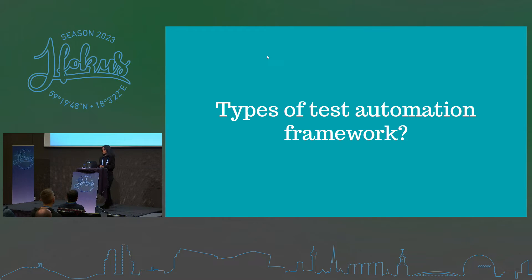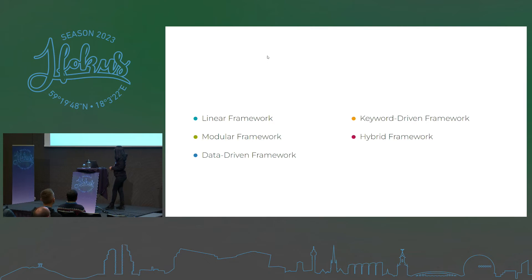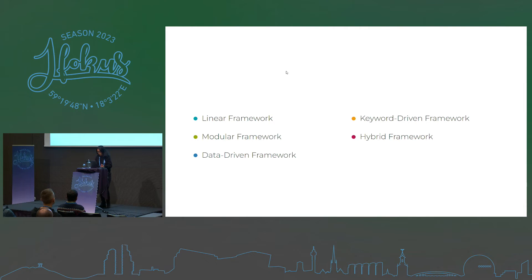The types of test automation frameworks we can have are different. We have linear framework, modular, data-driven framework, keyword-driven framework, and hybrid frameworks. I'm going to go through each one of them — what it is and how we can use it, with an example at the last slide. The linear framework is the simplest type, where test cases are executed in a linear sequential fashion, one after the other in the order in which they are written.